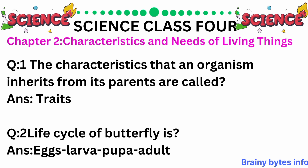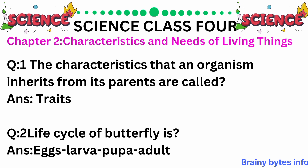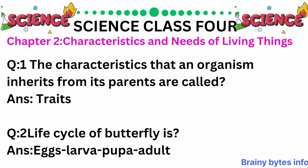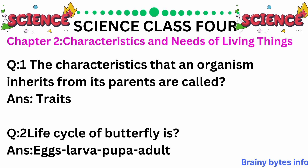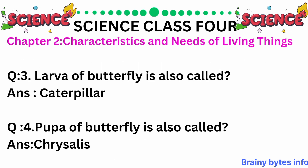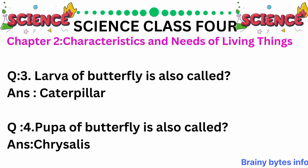The characteristics that an organism inherits from its parents are called traits. The life cycle of a butterfly is: eggs, larva, pupa, adult. The larva of a butterfly is also called a caterpillar.